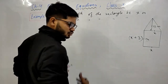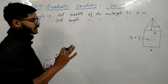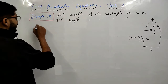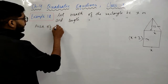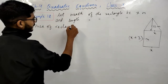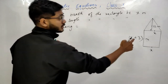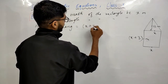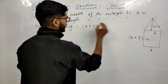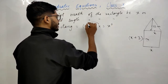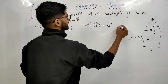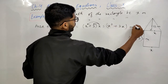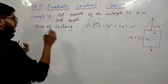अब हम देखेंगे area of rectangle। Area of rectangle = length × breadth। दोनों को multiply करेंगे तो आएगा x² + 3x meter square।